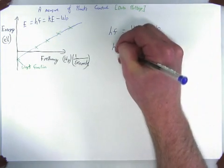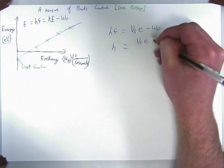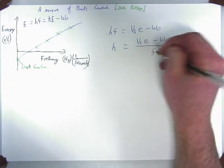So if we want Planck's constant itself, it's H, it's the voltage times the charge of the electron, minus the work function, divided by the frequency.